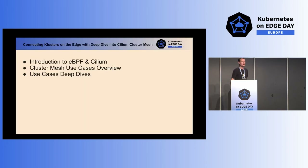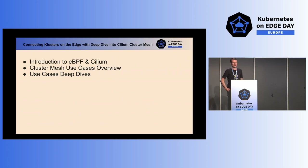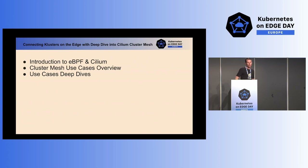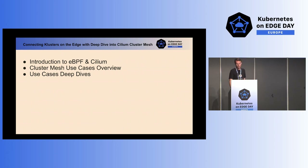The agenda for today is starting with an introduction about Cilium and eBPF to understand how it works and how Cilium uses it to publish services across clusters, or to have identity-based security across clusters using ClusterMesh. Then I want to do an overview and deep dive on ClusterMesh use cases, including how ClusterMesh can be used on the edge to support edge workloads in a topology which extends clusters across multiple Kubernetes clusters.